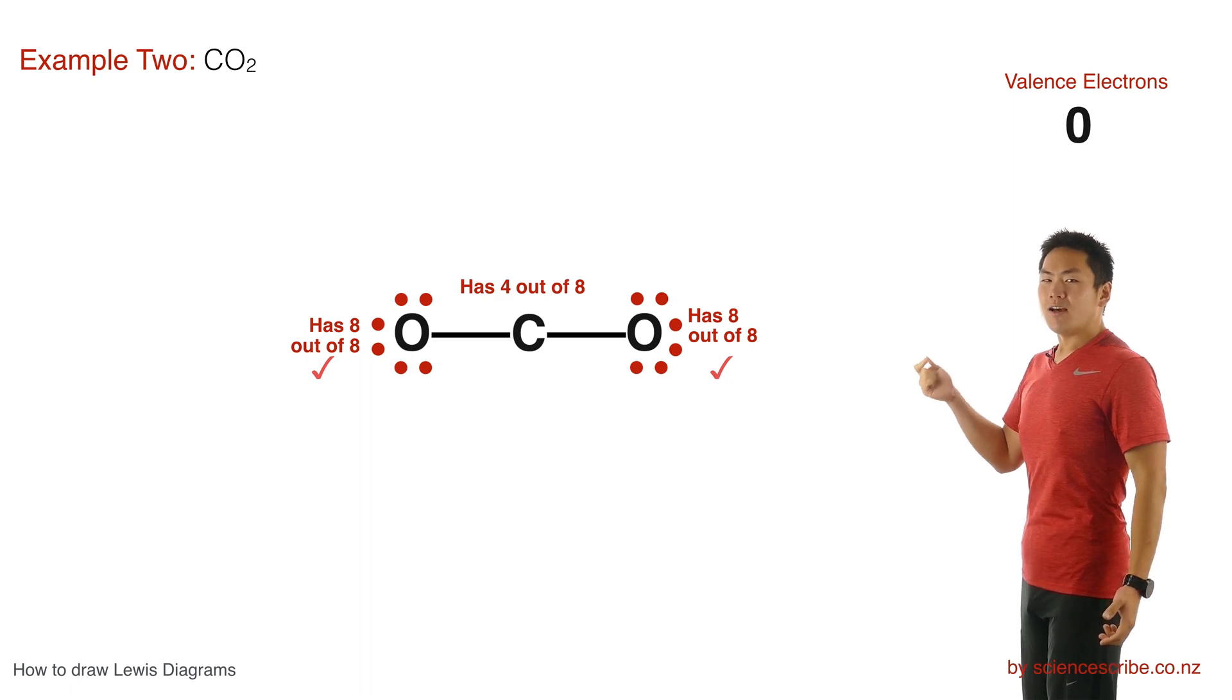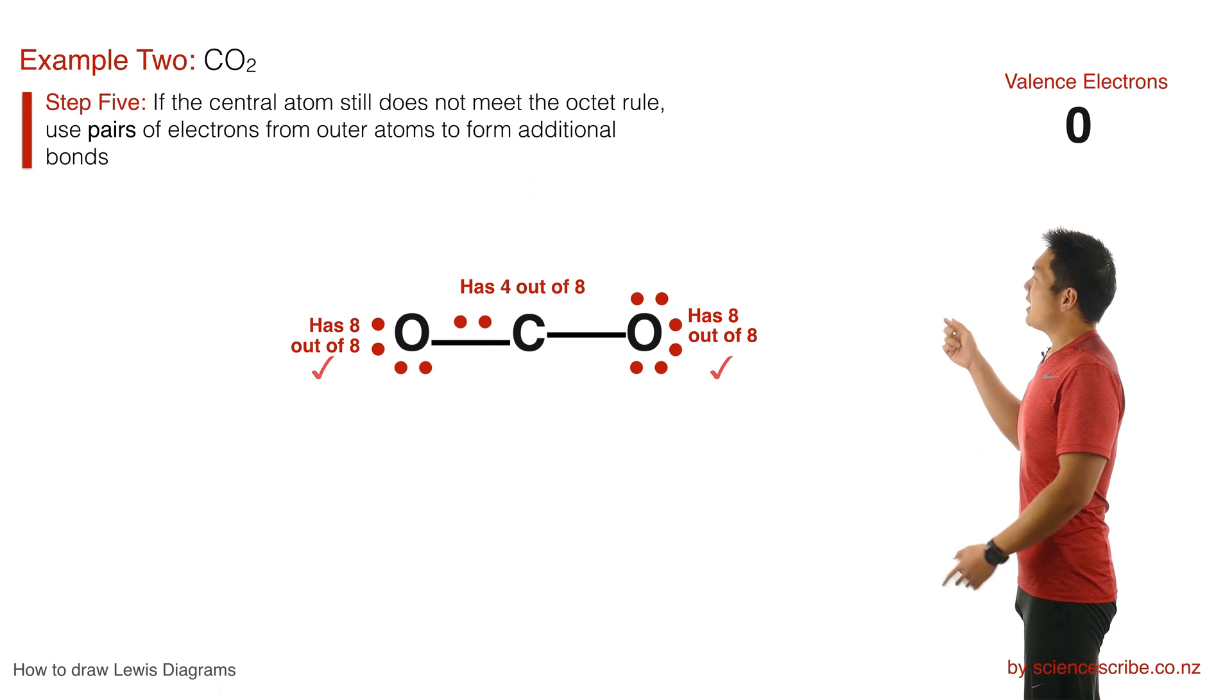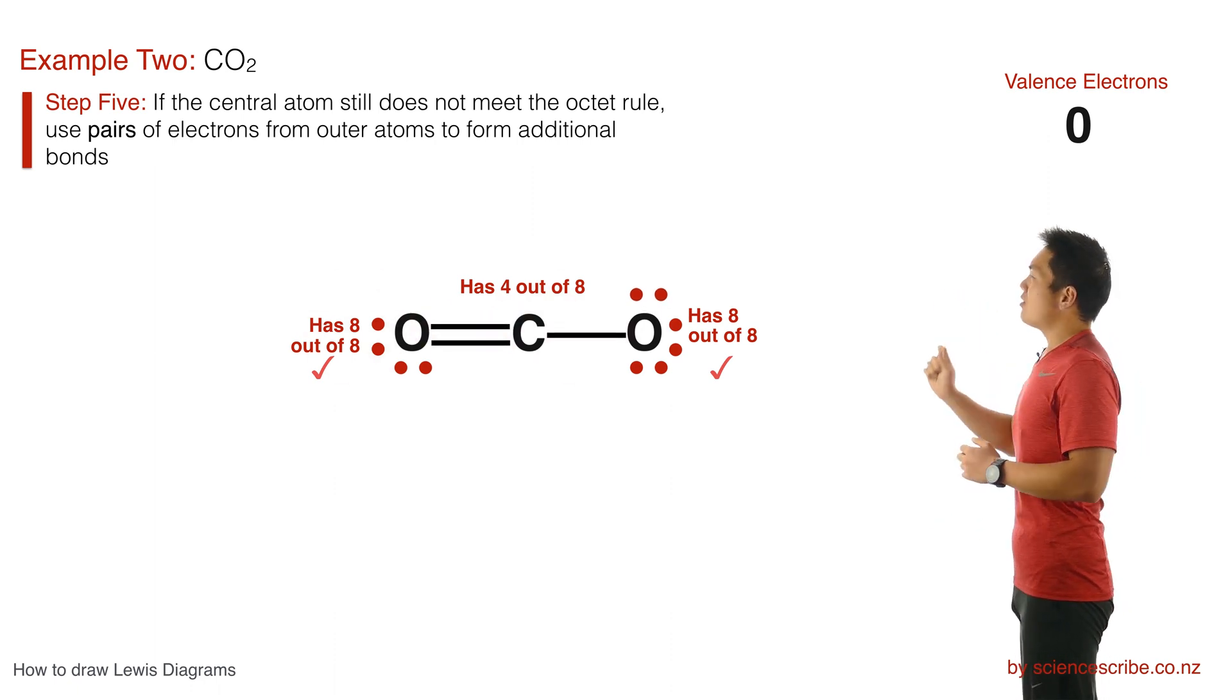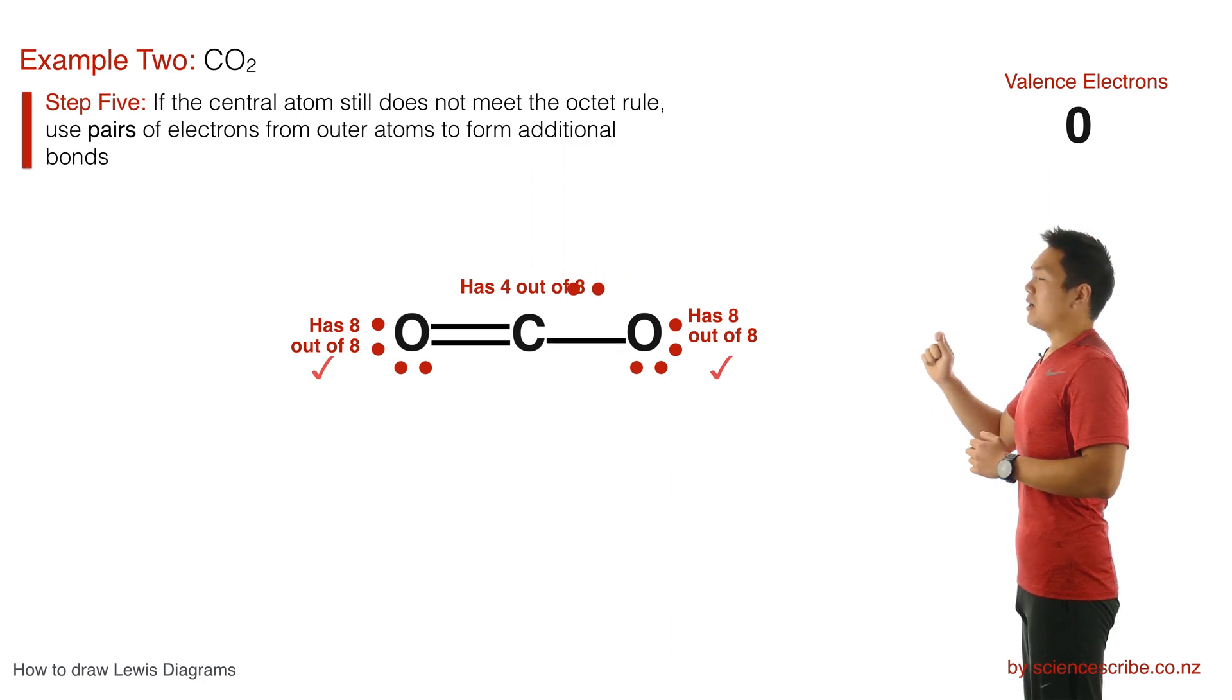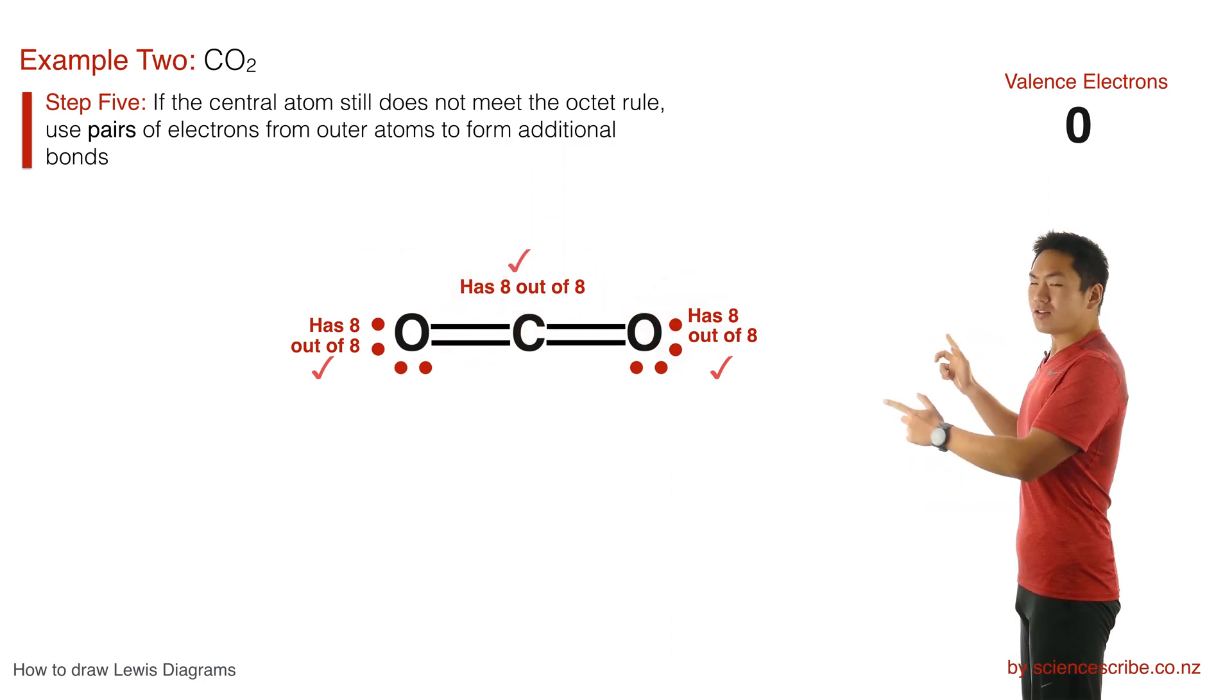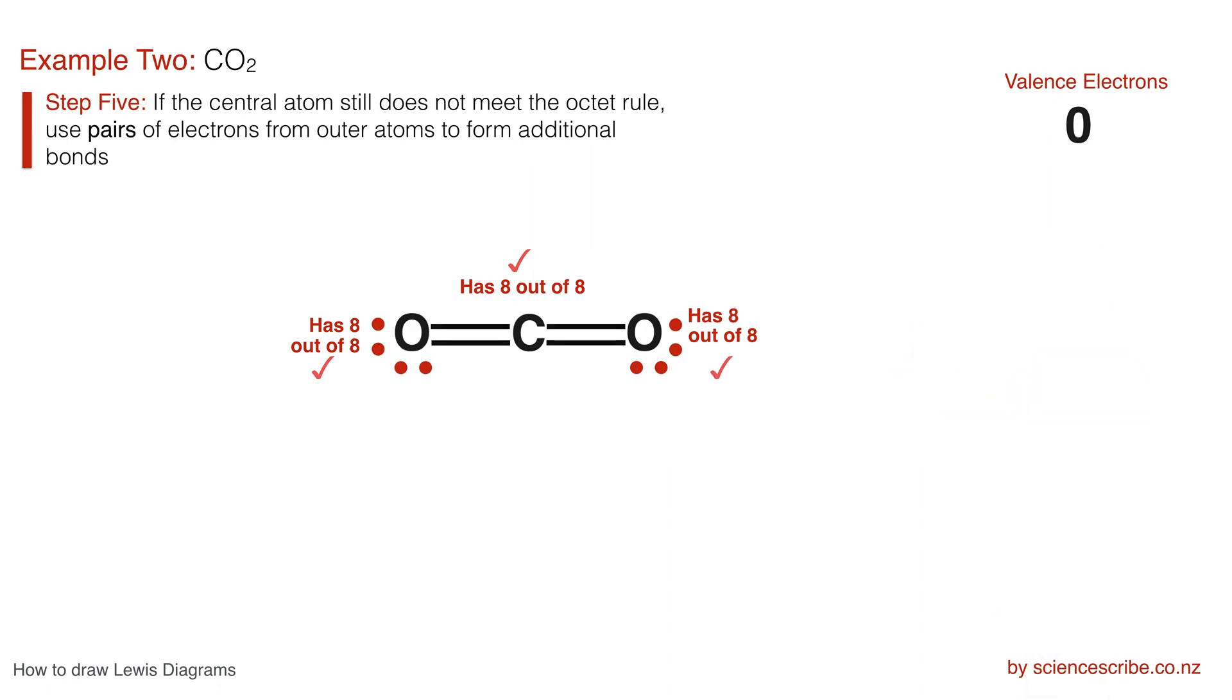This is when you create multiple bonds. To do that you need to look at the outer atoms and start using pairs of electrons. So two electrons at a time to create new bonds towards the central atom. When I do that and I do my quick recount, each oxygen actually still has eight out of eight, but when I recount on my carbon I can see that it now has eight out of eight as well.